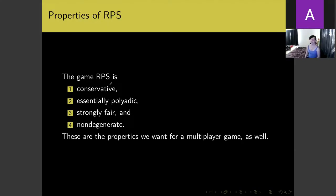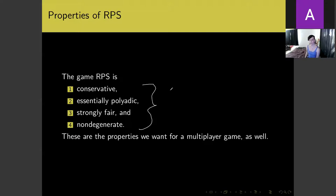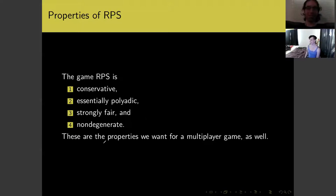Rock, paper, scissors — the magma corresponding to this game — is conservative, essentially polyadic, strongly fair, and non-degenerate. I'll explain what all of those things mean in a minute. Some are standard terminology; others are terms I defined but which I think fairly label these concepts. I apologize that this conglomeration of terms has such political connotations, and I don't know of anyone who is both conservative and poly, for what it's worth. In any case, these are properties we would want for a multiplayer game as well.